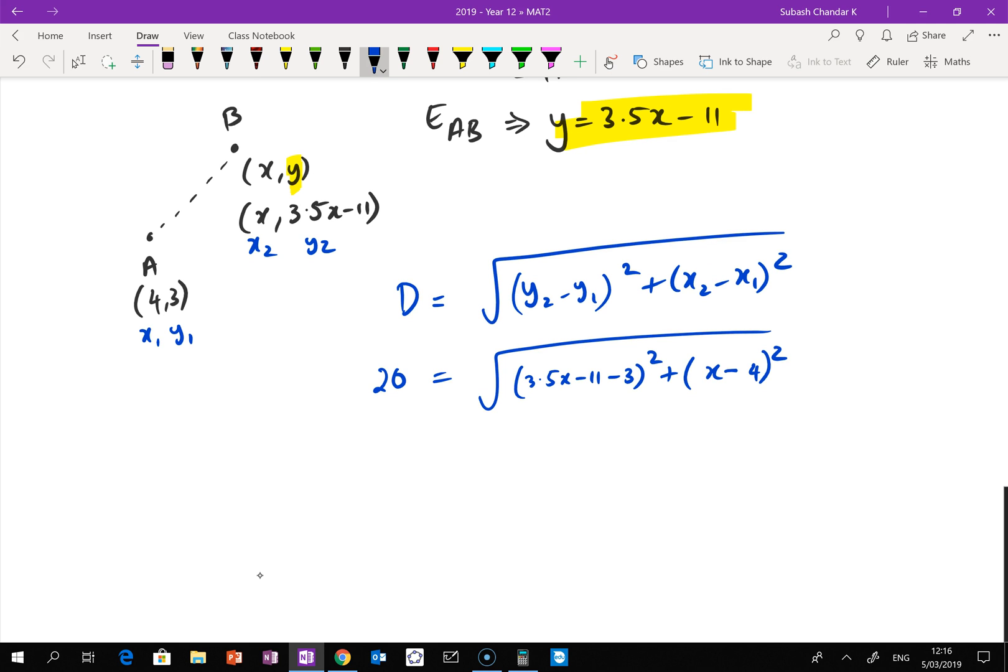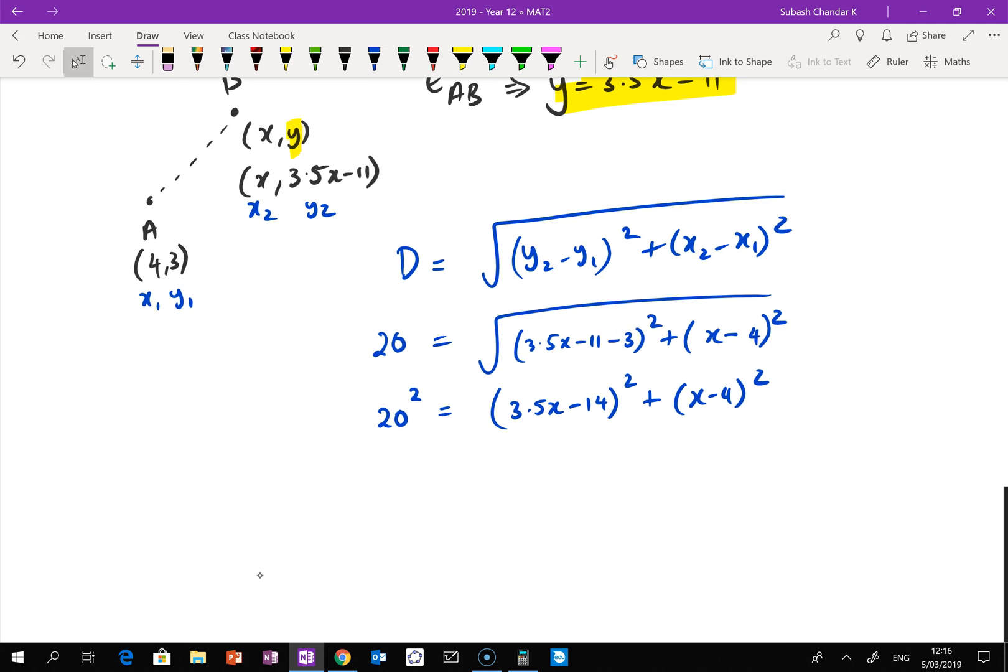So what I can do is I can get rid of the square root symbol by squaring the other side. So 20 squared equals (3.5x minus 14) squared plus (x minus 4) squared. So at this point, I've got two ways I can do this. I can do this in the graphics calculator or I can do it in decimals as well. So I'm going to show you guys both methods.